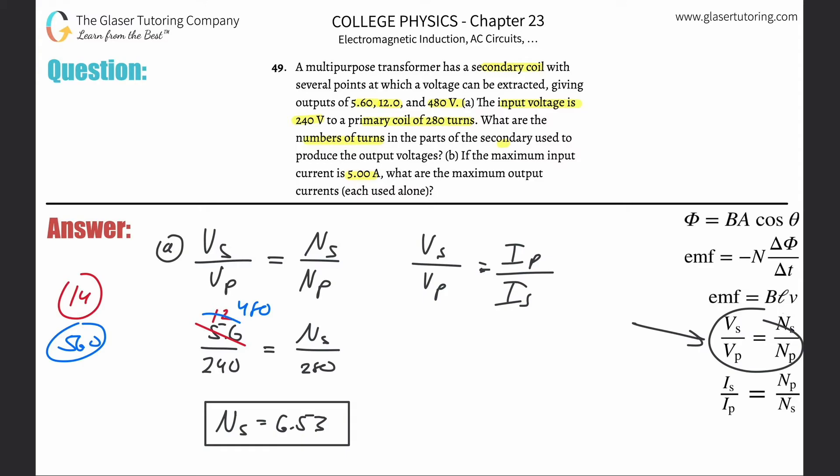So this is the voltage of secondary divided by voltage in the primary. That's going to be equal to the current in the primary divided by the current in the secondary. It says the maximum input current is five amps. So we know this input current, so that's going to be five.